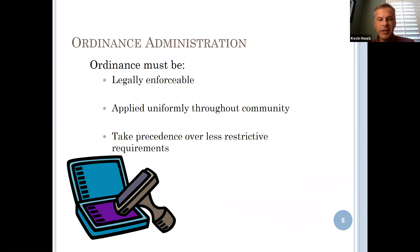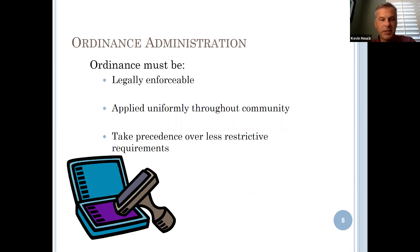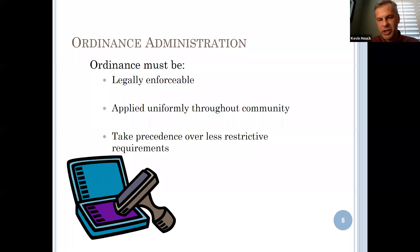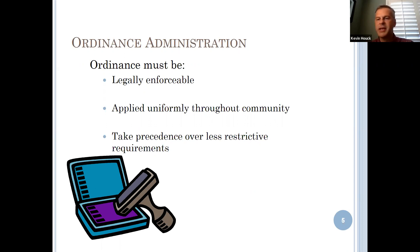The ordinance must be legally enforceable — if there is a violation of minimum requirements, there must be some mechanism for the community to take action. It must also be applied uniformly throughout the community. You cannot say floodplain regulations apply only to a special district while leaving the rest of the community unregulated. If you pass floodplain regulations, they must apply to the entire community. Additionally, they take precedence over less restrictive requirements, and you can go above and beyond the minimums.